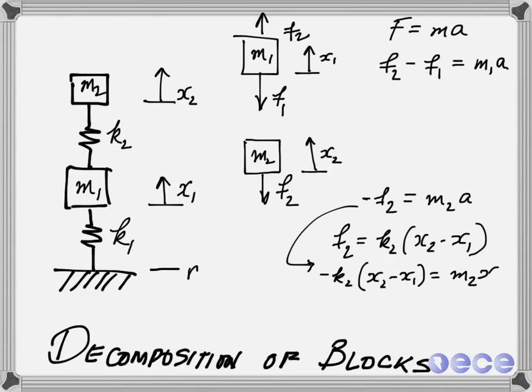And we can actually write this now in the equations of motion by saying minus k2 times the quantity x2 minus x1 equals m2 x2 double dot. So this is the specific values for how the different forces are acting on the mass m2.